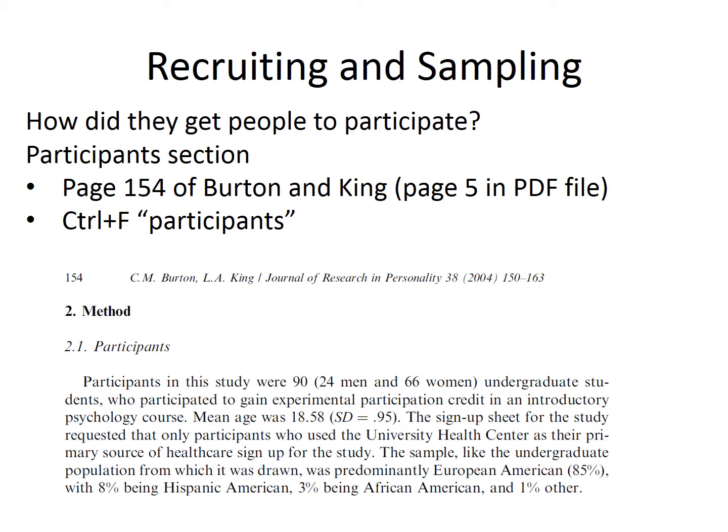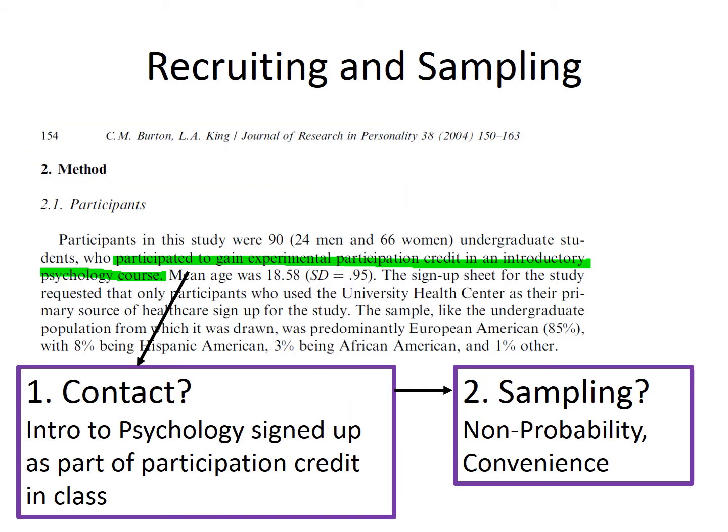In Burton and King, the information is on page 154, or page 5 of the PDF file. When we find the section that should include the information about how they recruited participants, we need to skim to find the specific details. The idea is to figure out how they got people to participate. In this case, we get the idea from the phrase about participation in an introductory psychology course. That tells us they contacted participants by making students in that class aware of the study and offering credit for participation.